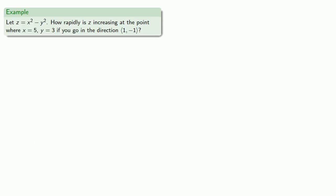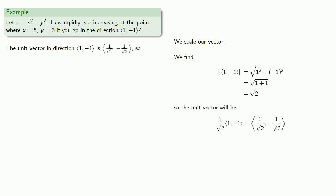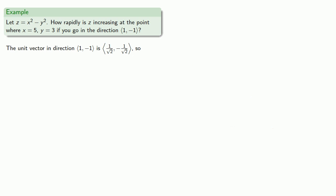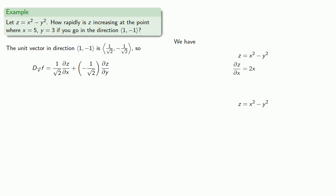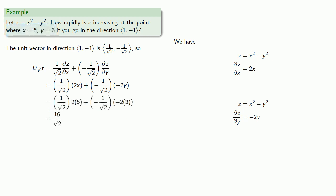For example, if z equals x squared minus y squared, how rapidly is z increasing at the point where x equals 5, y equals 3, if you go in the direction (1, negative 1)? We'll need to find the unit vector in the same direction, so we'll scale our vector — first finding its magnitude. Then we find our unit vector. Our directional derivative will need the partial of z with respect to x and the partial of z with respect to y, so we find those partial derivatives and substitute, which gives us our directional derivative.